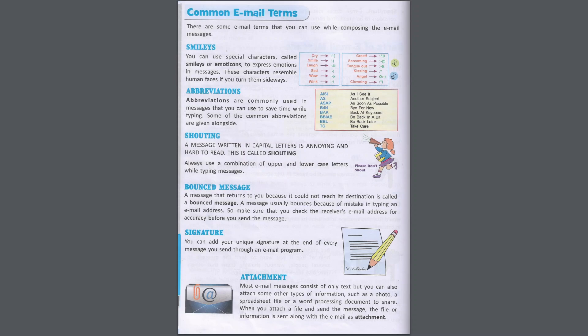Signature: you can add your unique signature at the end of every message you send through an email program. Attachment: most email messages consist of only text, but you can also attach other types of information such as a photo, a spreadsheet file, or a word processing document to share. When you attach a file and send the message, the file or information is sent along with the email as an attachment.